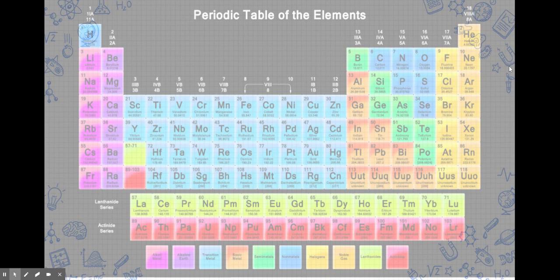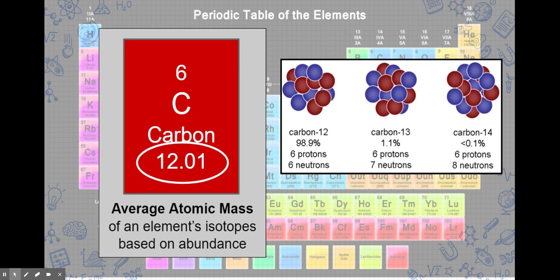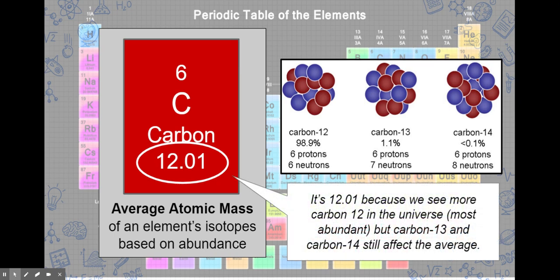This all relates back to the periodic table of the elements. If we look at each of the element symbols, their masses on the bottom are decimal masses. They're not whole numbers. And that's because these represent the average mass of that element's isotopes based on its abundance. So carbon, for example, is 12.01. The reason it's 12.01 is because we see more carbon-12 in the universe. So if we round that number, we get 12. However, there still is more carbons, carbon-13 and carbon-14, although they affect the average a little bit less than the most abundant elements.